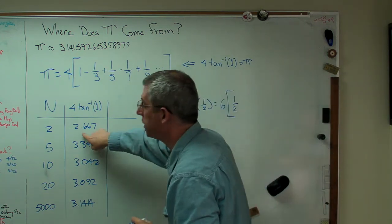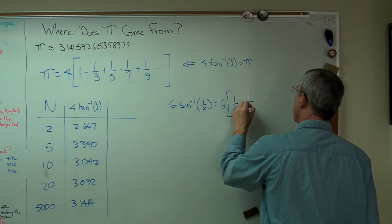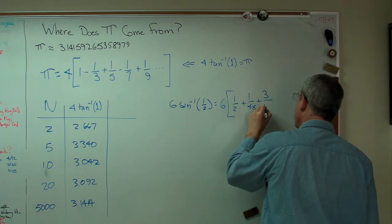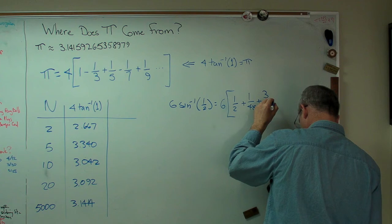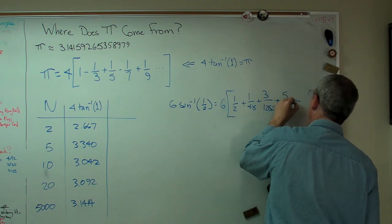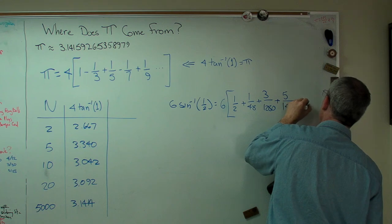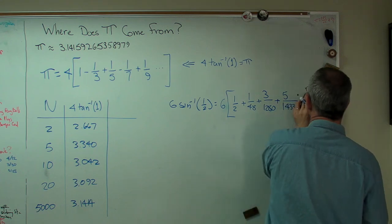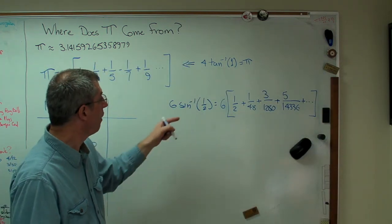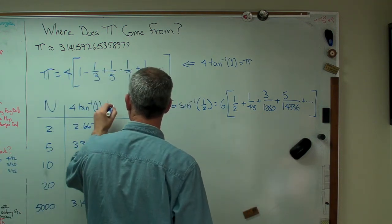Plus 1 over 48 plus 3 over 1280. And I've got one more here I'll write down. Plus 5 over 14336. That's close enough. That converges much, much faster. These terms get small really quickly.